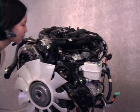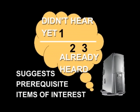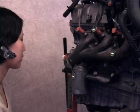The application server keeps track of which items the user has heard about and doesn't suggest the same item twice. Also, the system can suggest prerequisite items of interest that would be helpful to hear about before the item currently in front of the user.